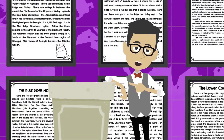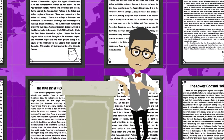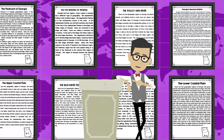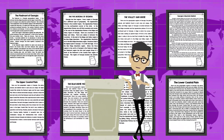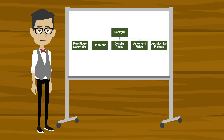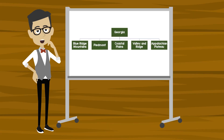So there you have it — the habitats of the five geographic regions of the state of Georgia: the Blue Ridge Mountains, Valley and Ridge, Appalachian Plateau, Piedmont, and Coastal Plains.